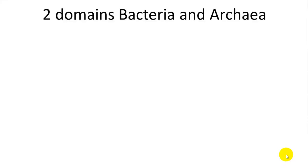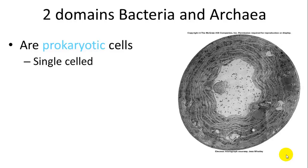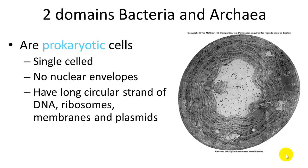There are two domains of bacteria: eubacteria and archaea — we'll just call them bacteria and archaea. They are all prokaryotic cells, which means they are single-celled. They do not have a nuclear envelope, so they don't have a nucleus, but they do have a chromosome.